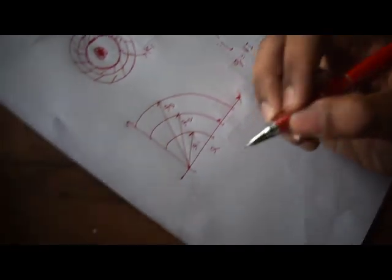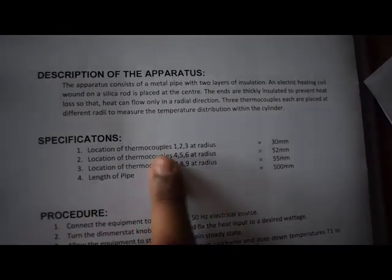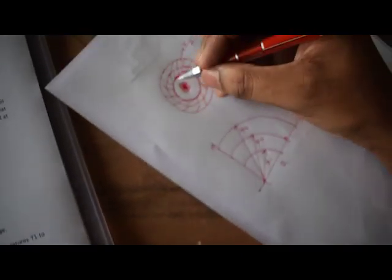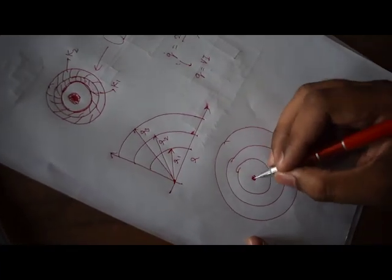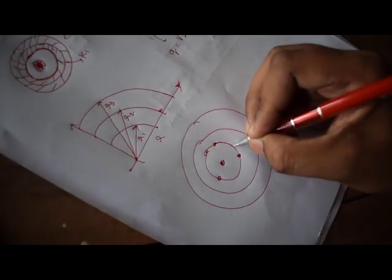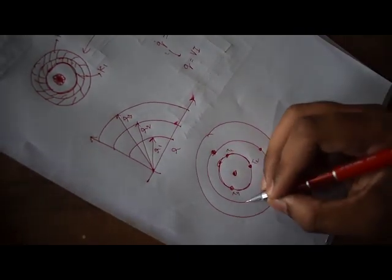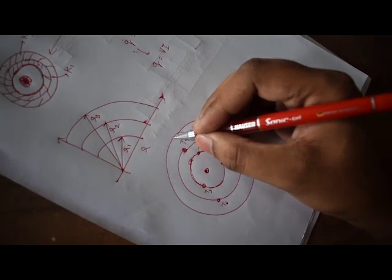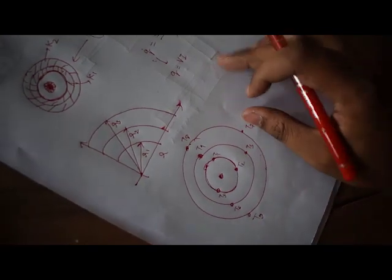We know R2 and R1 — that is given in the data. The thermocouples are located at: T1, T2, T3 at a radius of 30 mm; T4, T5, T6 at 52 mm; and T7, T8, T9 at 55 mm. At the inside wall of the pipe there are 3 thermocouples giving us the surface temperature of the hollow pipe — T1, T2, T3. On the first insulation layer we have T4, T5, T6, and on the second insulation layer we have T7, T8, T9.